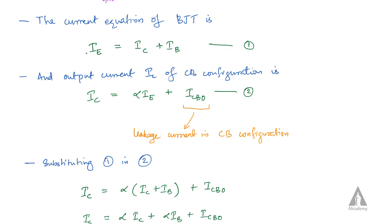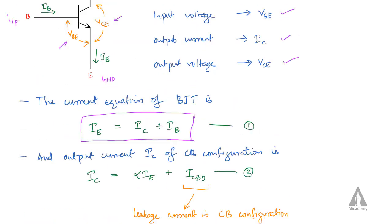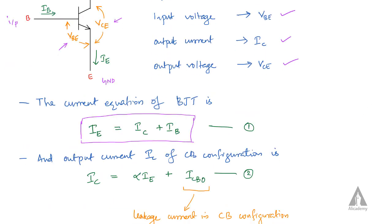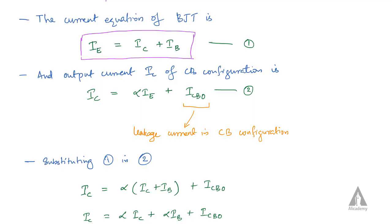Now for the current equation of BJT: IE is equal to IC plus IB. IE is the outward flowing current while IB and IC are inward flowing currents with respect to the transistor. This is equation number 1.